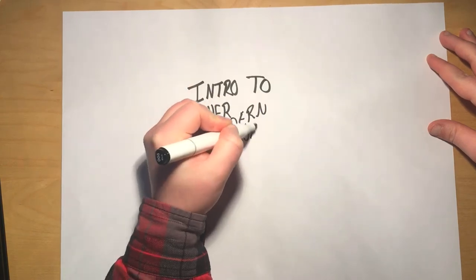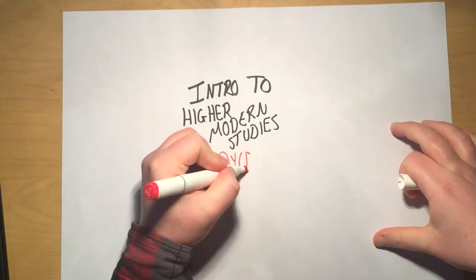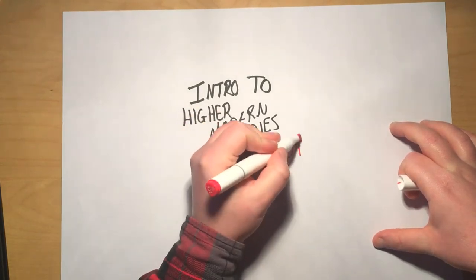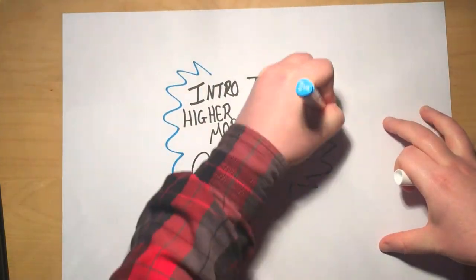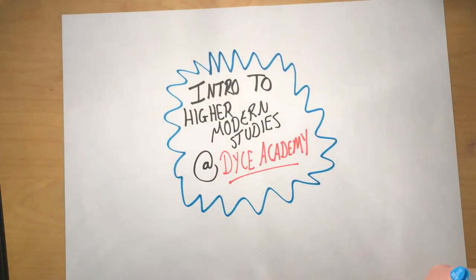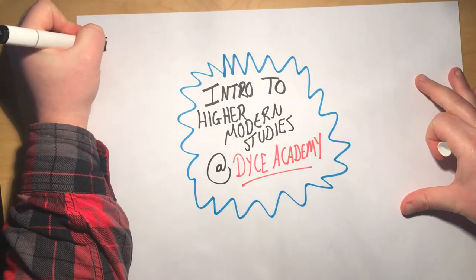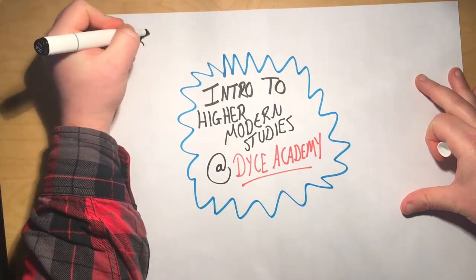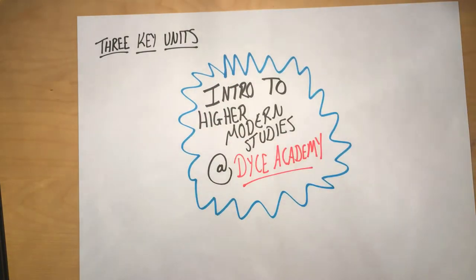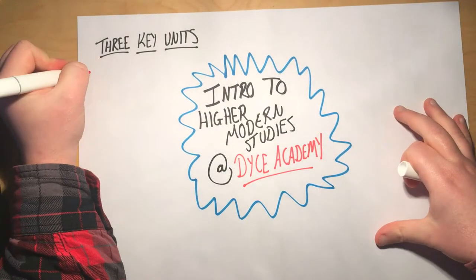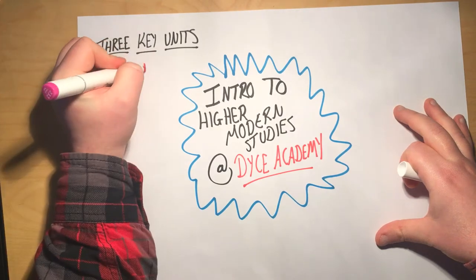So the course content at higher modern studies is split into three different units. Different schools might do slightly different things because in some of the units there's a choice that schools make about what they want to look at. So different schools might do slightly different things when it comes to their units, but we've got our three at Dice, and our first unit is social inequalities in the UK.